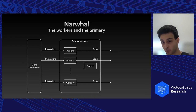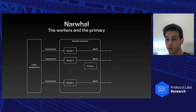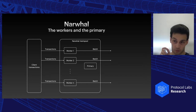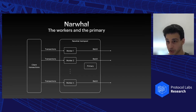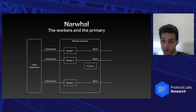For example, worker one gets transactions from a client, makes a batch, and broadcasts it to all other workers number one of all other nodes. Worker two makes its own batch and sends it to all workers number two of all other nodes — importantly, worker one does not send any message to worker number two.